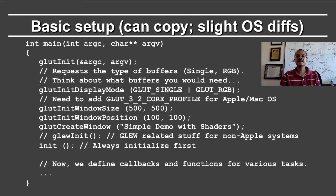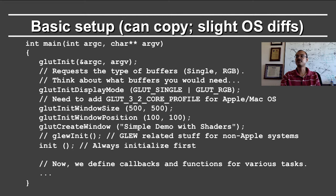I will first discuss some very basic setup code. You will likely want to copy this in your own OpenGL programs. We do make available the entire source code on a variety of different systems for the program that I will be showing. Note that different operating systems differ slightly. The program starts as usual in a C++ program with the main routine. The first line is the initialization, or GLUT init, to start the windowing toolkit GLUT. The line after that, which discusses the GLUT init display mode, requests the types of buffers that you want from GLUT.